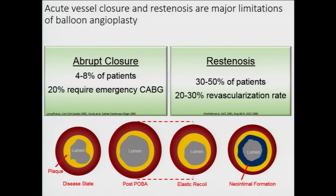There was a problem when we started doing balloon angioplasties in the 1980s: a lot of those patients developed what is called abrupt closure. Right while in the cath lab, or very soon afterwards, they would close down, and almost 20 percent required emergency bypass surgery. Even when patients survived, almost 30 to 50 percent had restenosis, leading to repeat angioplasties in almost one-third of those patients. Very frustrating times for balloon angioplasty.